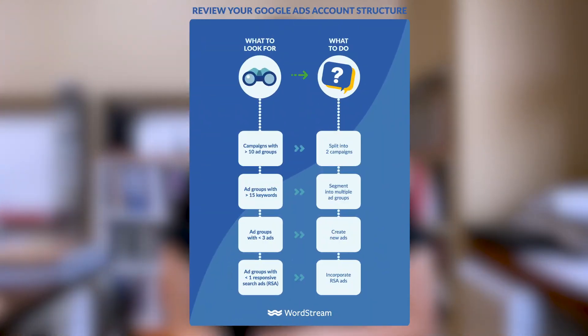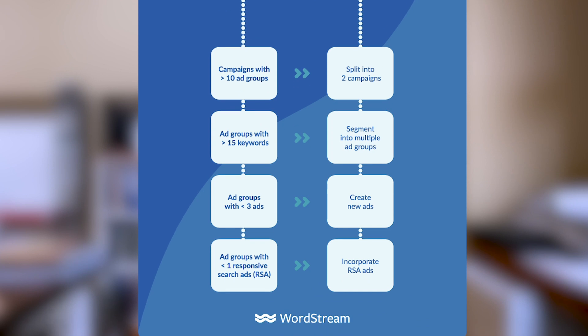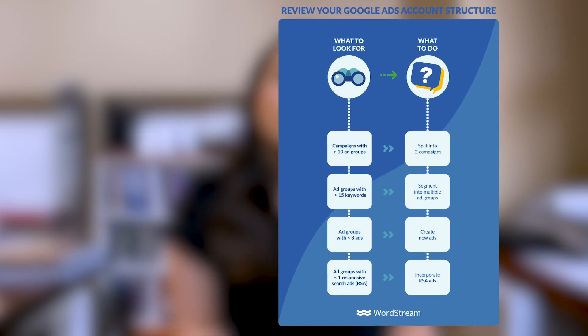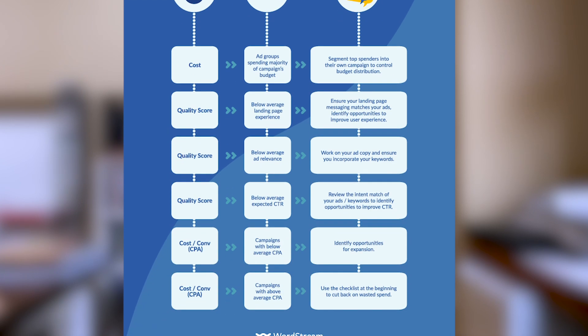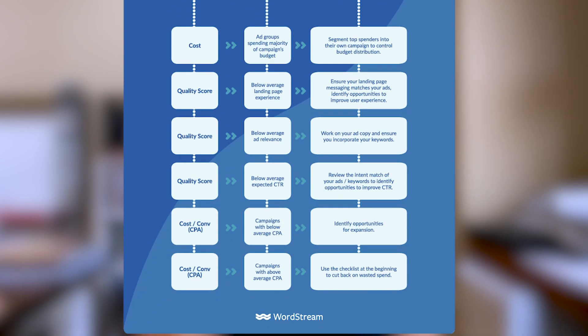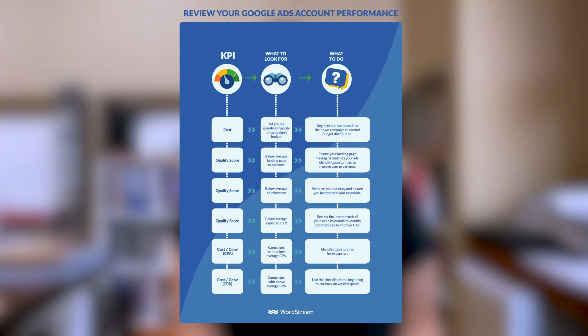Account structure is the core component of your Google Ads foundation. We've already done a video that goes through all the nitty gritty of account structure, so let's focus on a few key highlights. First, check to make sure your account structure follows best practices. After you've checked for best practices, check for key performance indicators and what those tell you about your account structure. Once you've reviewed those indicators, you're ready to plan how you'll optimize your account structure for key metrics like conversions.